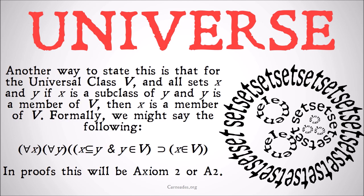Another way to state this is that for the universal class V and all sets X and Y: if X is a subclass of Y and Y is a member of V, then X is a member of V. Formally, for all X and all Y, X is a subclass of Y and Y is a member of V implies that X is a member of V. In proofs, this will be Axiom 2 or A2.